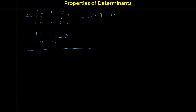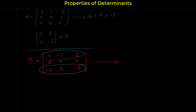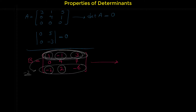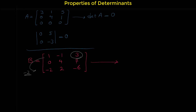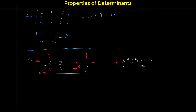Consider this matrix: 1, −1, 3 / 0, 4, 7 / −2, 2, −6. If you look carefully, the third row is a multiple of the first row. If you multiply the first row by −2: 1×(−2)=−2, (−1)×(−2)=2, and 3×(−2)=−6. So without any calculation, the determinant of matrix B is 0.